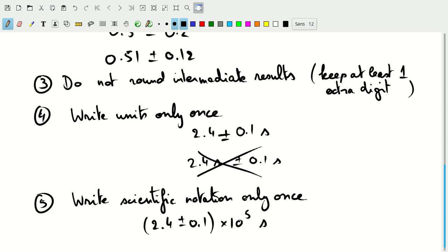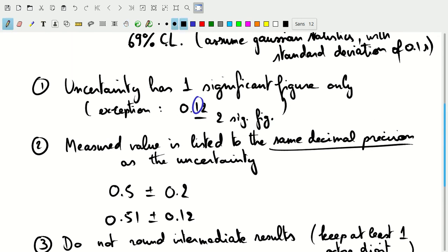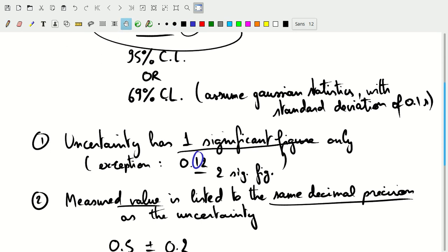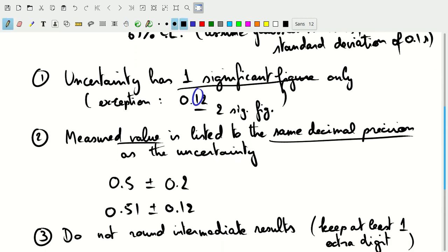Just to go over this again: keep one significant figure only in the uncertainties, unless there's this exception that applies, and write the measured value, the best value or best estimate value, to the same number of decimals as the uncertainty.